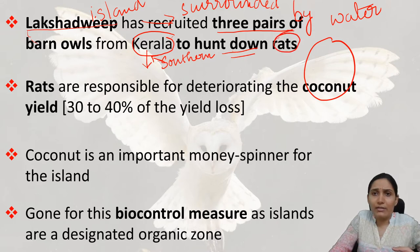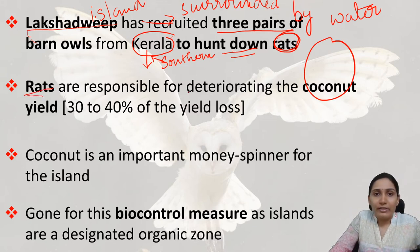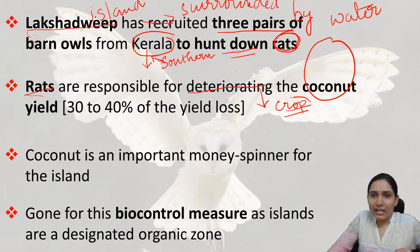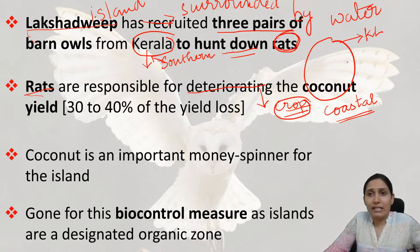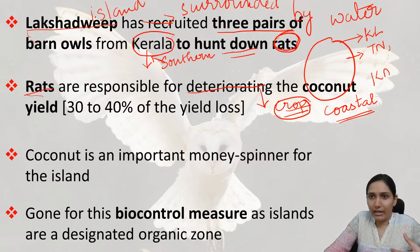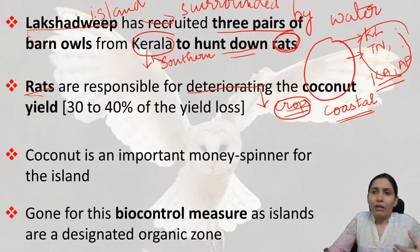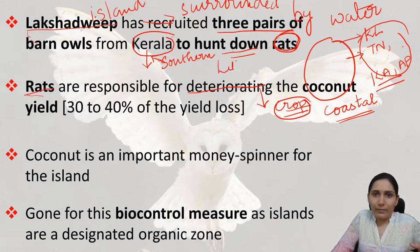The reason for recruiting these barn owls is to hunt down the rat population, because rats are responsible for deteriorating the coconut yield in Lakshadweep. Coconut is a major crop there. If we look at coastal states in India, we see that they have plenty of coconut crops — for example, Kerala, whose name is derived from 'kera' meaning coconut, as well as Tamil Nadu, Karnataka, and Andhra Pradesh.